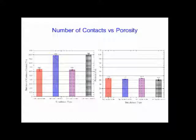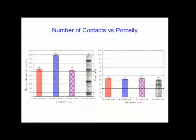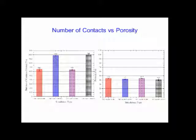Looking at the results, there was not a large difference between high and low angular particles in terms of number of contacts. For porosity, values ranged from about 40.8% for low angular limestone to 43.8% for high angular granite — only about a 3% difference. However, when looking at the number of contacts, there is almost a 50% difference between limestone and granite. This proves that during testing we were having more contact points in limestone, which caused more chemical bonds and increased shear strength.